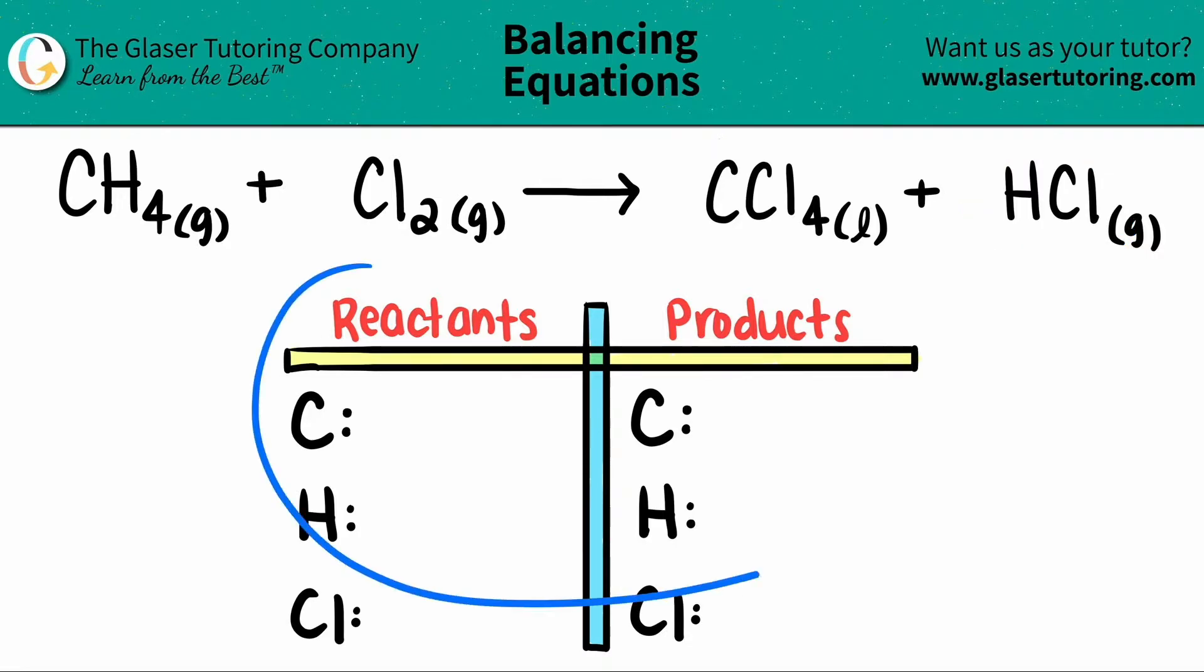Now, I already wrote us our balancing chart of the reactants and the products and the elements that I see are on both the reactants and the product side. So in this case, we have three elements: carbon, hydrogen, and chlorine.